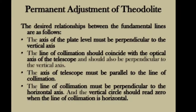That is, the plate level axis should be perpendicular to the vertical axis. Number two: the line of collimation should coincide with the optical axis of the telescope, and it also should be perpendicular to the vertical axis.